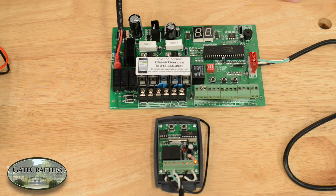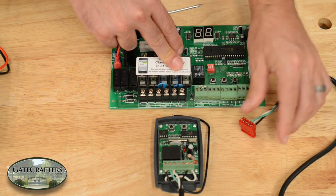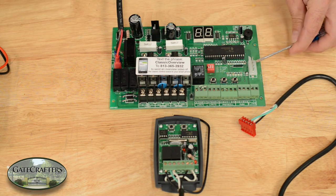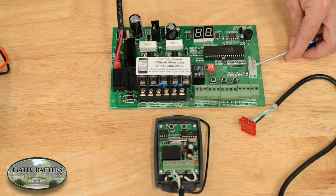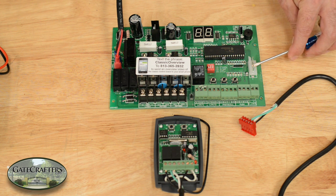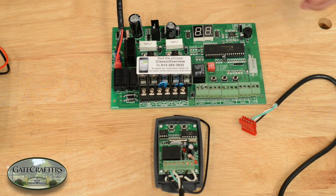The first thing to figure out is whether it's the receiver or the control board. To do this, remove the plug and test by jumping between the second and third pin from the bottom using a small screwdriver. This should activate the gate. In this scenario, it is not activating the gate.